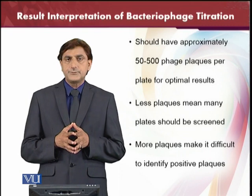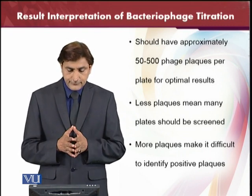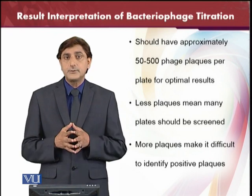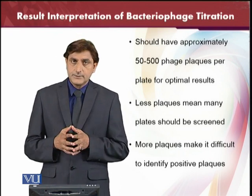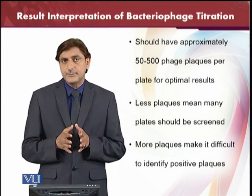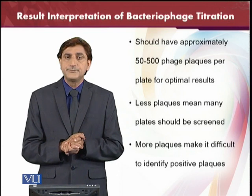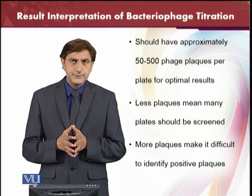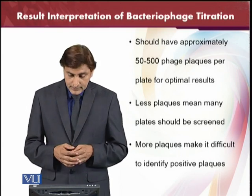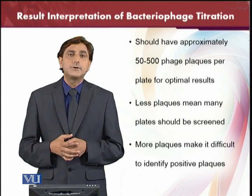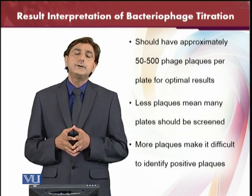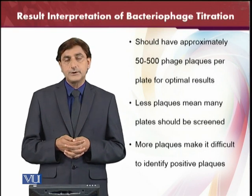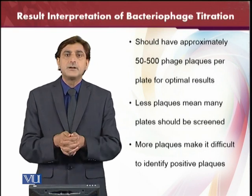One important point: if plaques are more than 300 it will be difficult to count and they will be considered too difficult to count. You should choose plates with between 50 to 500 plaques for easy counting and examination. If there are fewer than 50 plaques, you will need to screen more plates. Less plaques mean many plates need to be screened. If there are too many plaques, it becomes difficult to identify and distinguish the individual plaques you need to count.